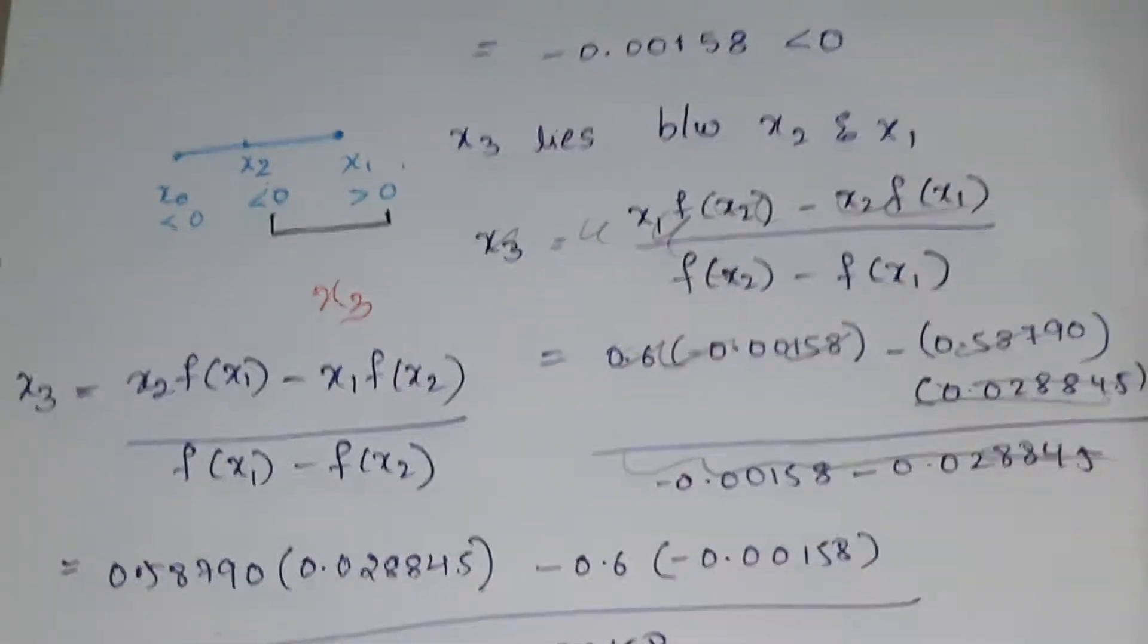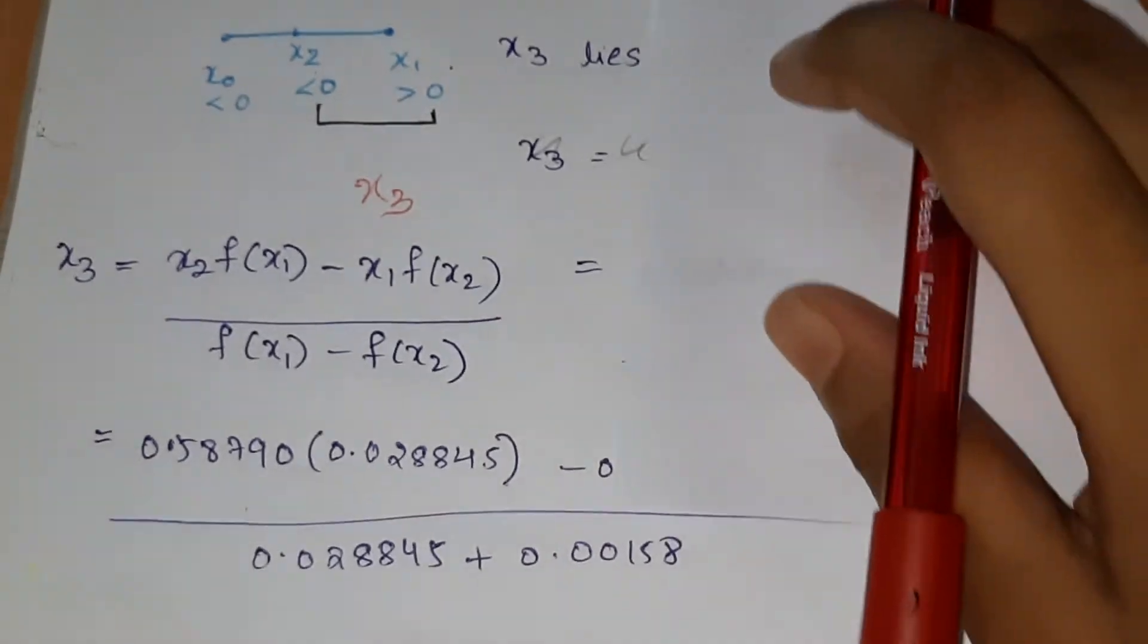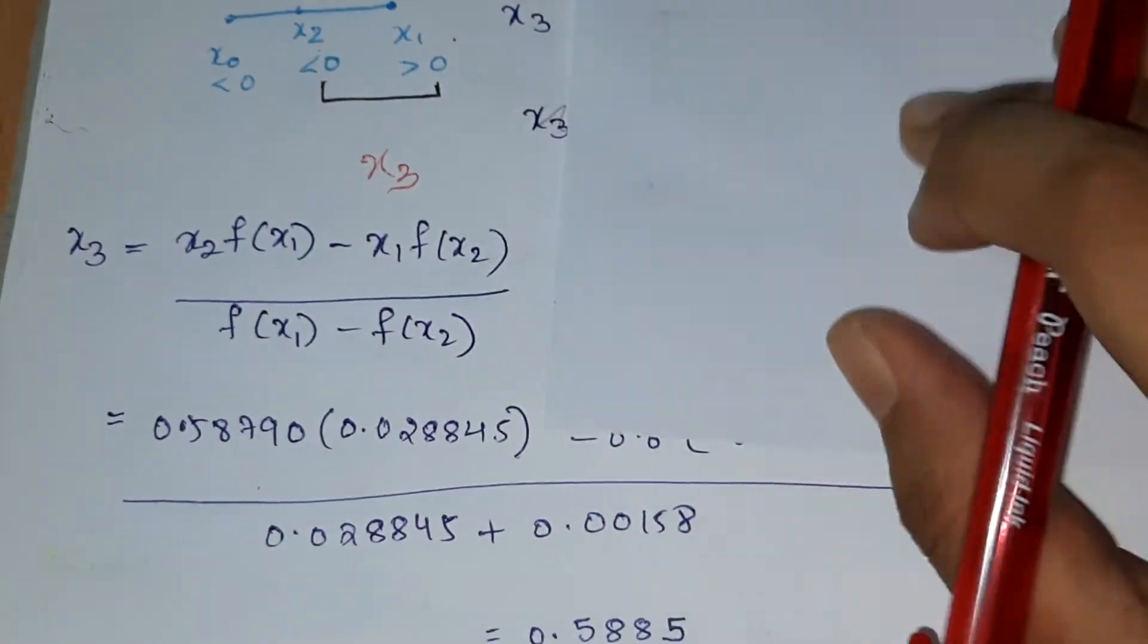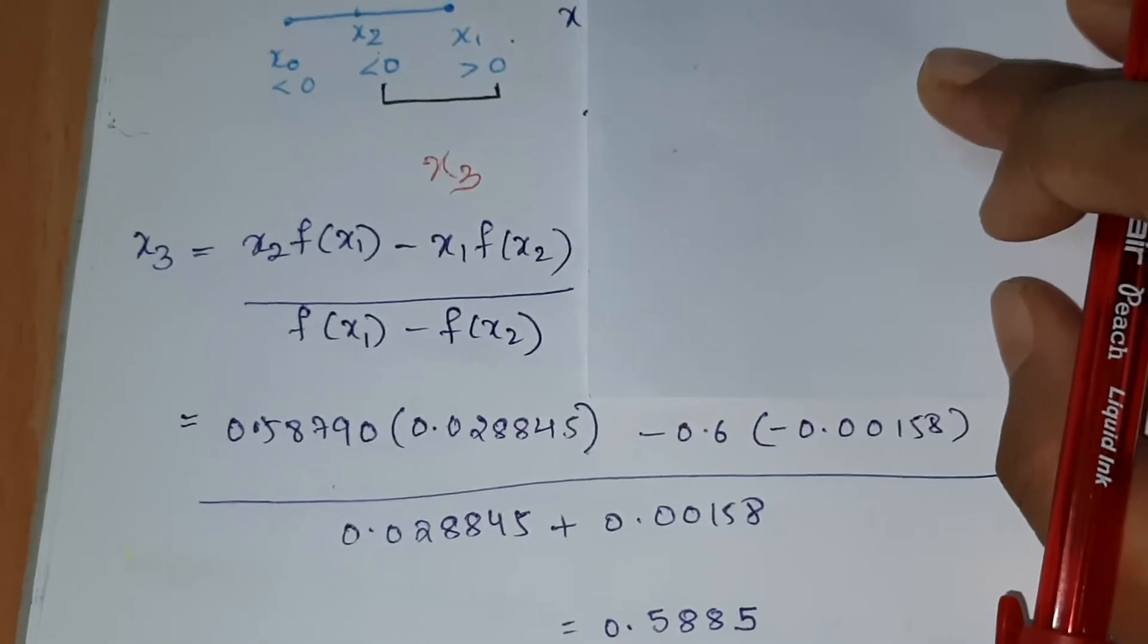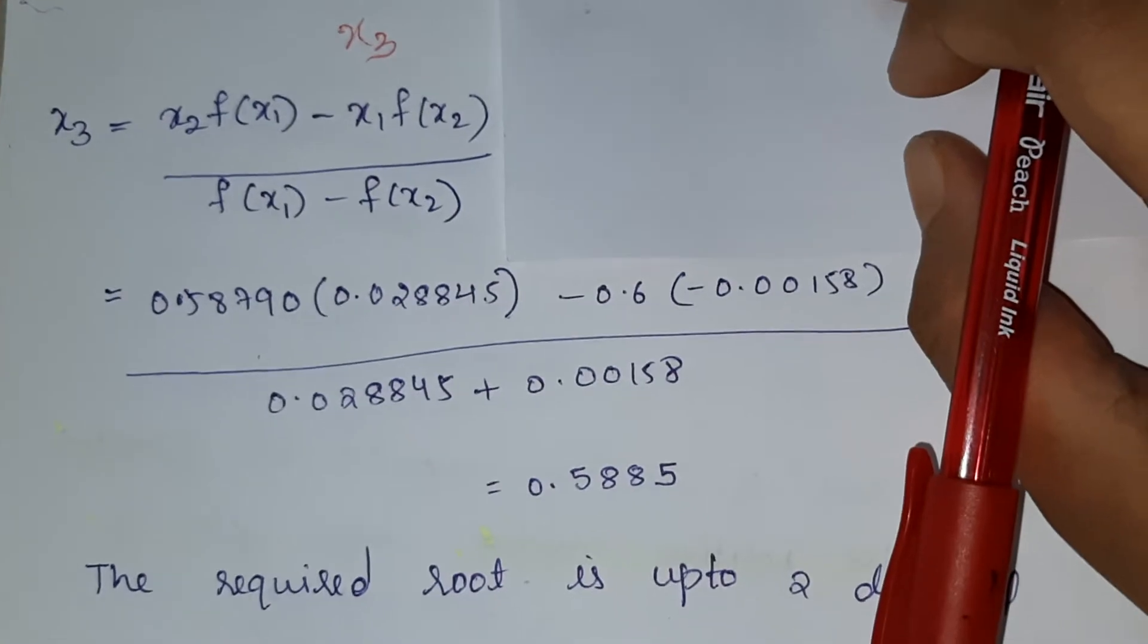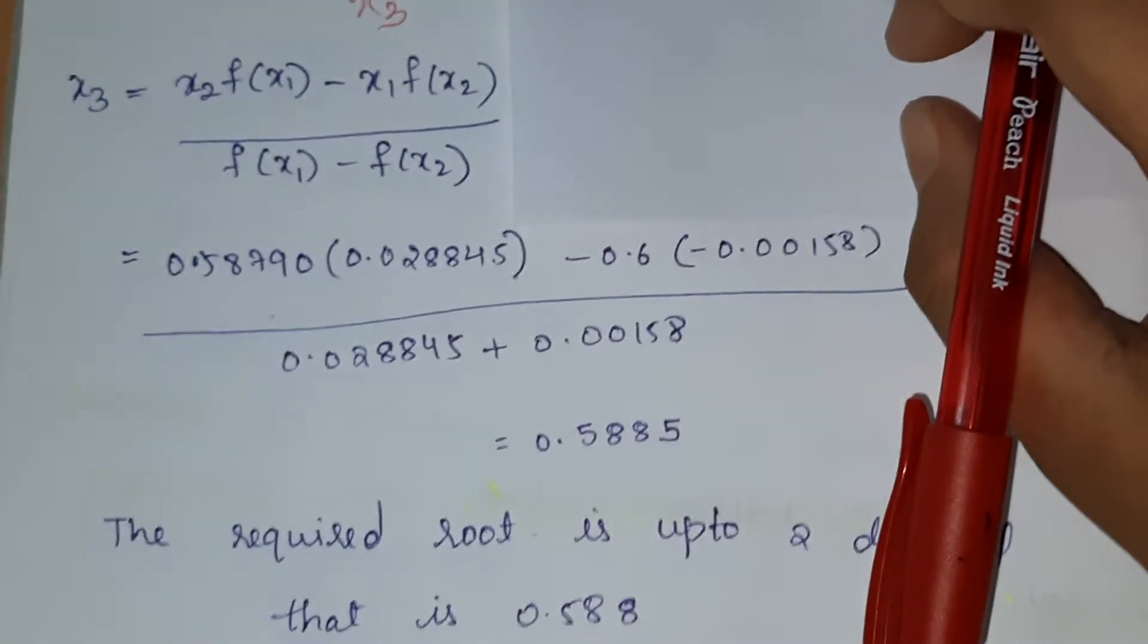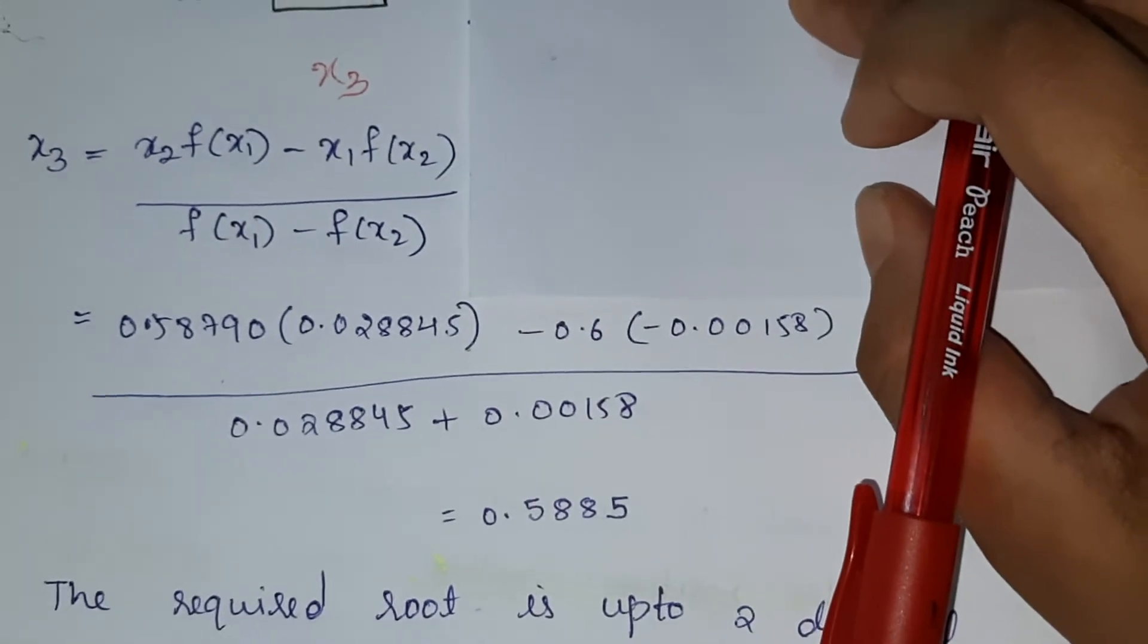Now x3 equals x2 times f(x1) minus x1 times f(x2), divided by f(x1) minus f(x2). Substitute the values of x2, f(x1), x1, and f(x2) into the equation.